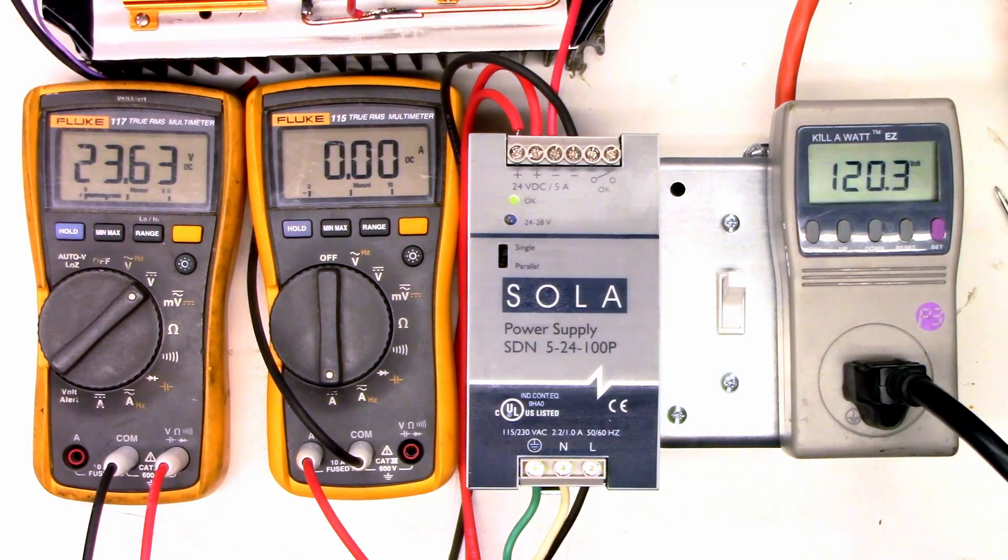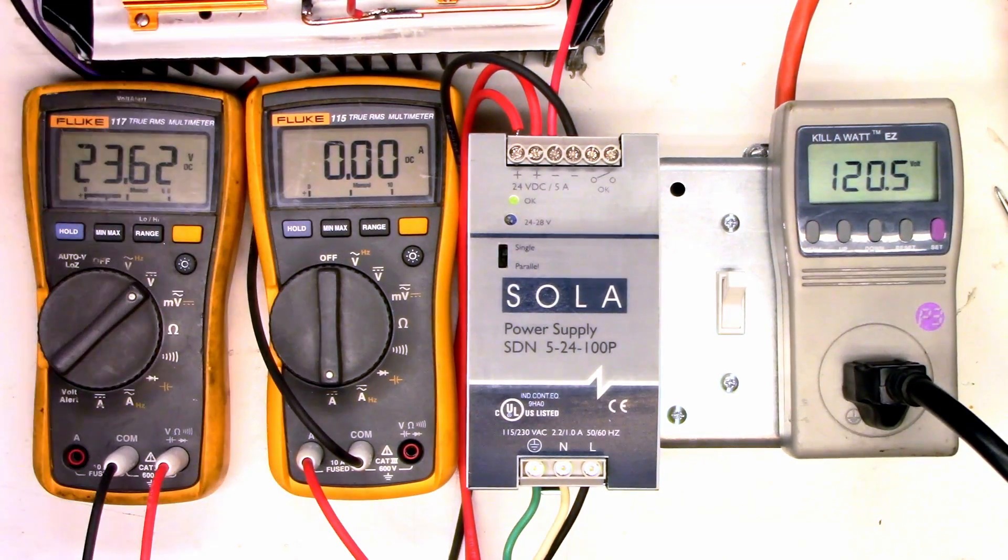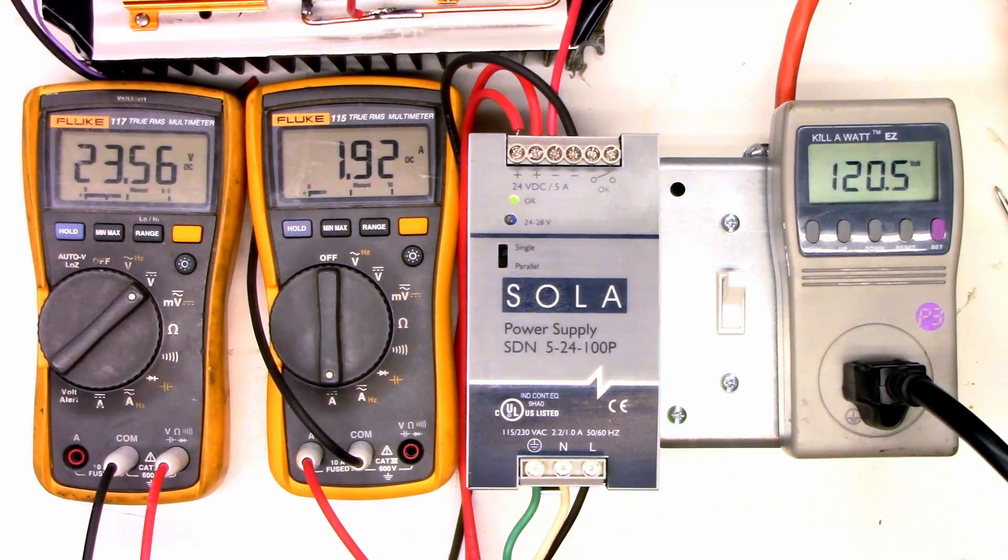I'm going to go ahead and switch this on. It's going to turn on the Sola and the kilowatt, and we see we have 23.6 volts output right now, and we have 120.5 volts going into it, and 0 amps on the amp meter. Let's go ahead and turn on the first load, 1.93 amps, 23.5 volts coming out of it.